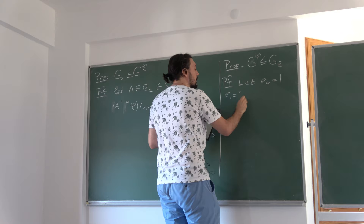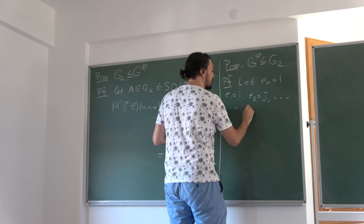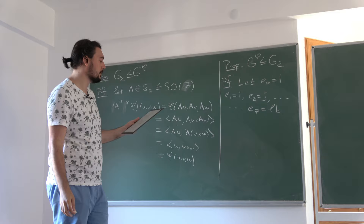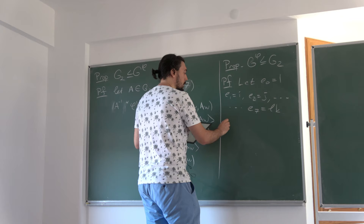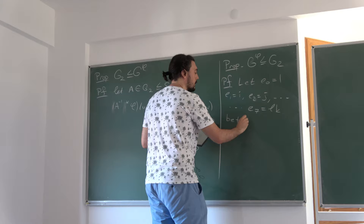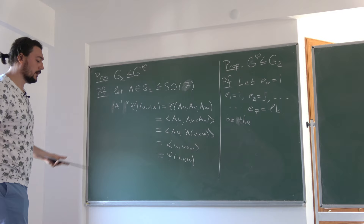This shows that A respects the cross product, which is almost the octonian multiplication — it's the restriction of octonian multiplication to the imaginary part. We're showing this group G^φ preserves parts of the octonian multiplication. What we've shown so far is A(v cross w) = Av cross Aw. Now for orthogonal u and v in imaginary octonions, we have: A(uv) = A(imaginary uv) = A(u cross v) = Au cross Av, which equals imaginary(Au · Av). But since Au and Av are orthogonal — A is orthogonal — their product is imaginary. So A(uv) = (Au)(Av).